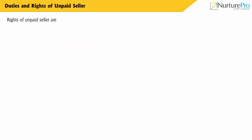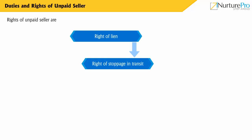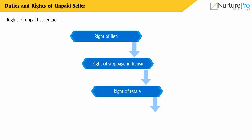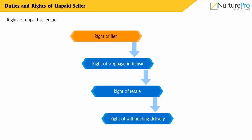The rights of an unpaid seller are: Right of Lien, Right of Stoppage in Transit, Right of Resale, and Right of Withholding Delivery. The Right of Lien is the right to hold the goods by a seller who has not received payment.